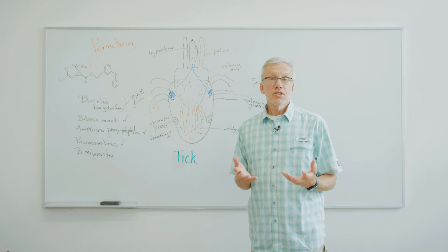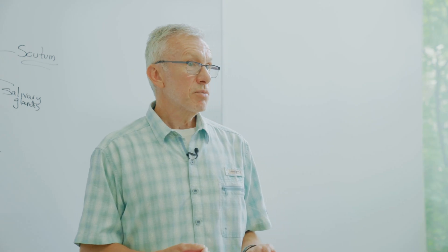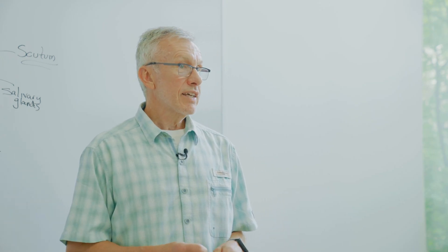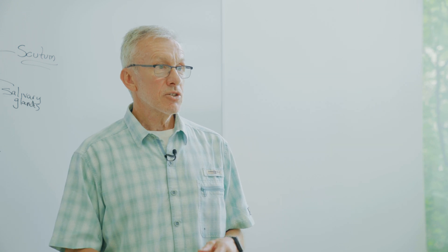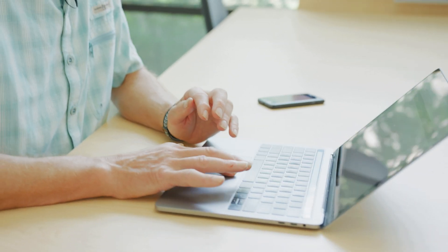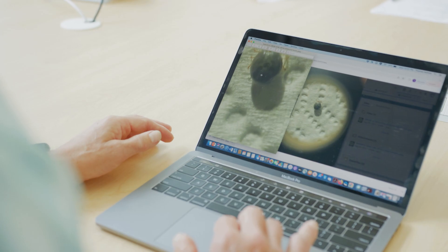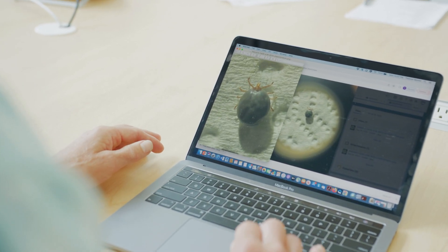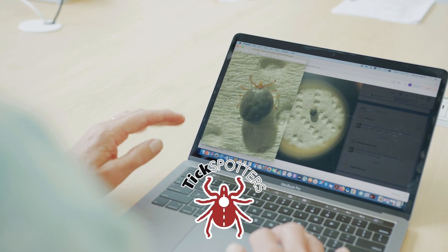So what do you do if you've just found a tick? Many people just try and rip it off as quick as they can and either flush it away or burn it or dispose of it in some way. But what you really should do is take a clear picture of the top side of the tick and send it to tick spotters.